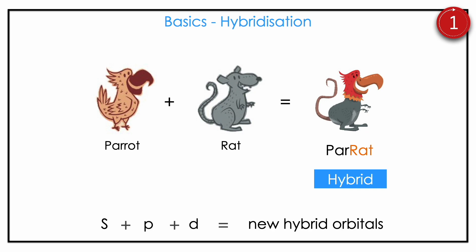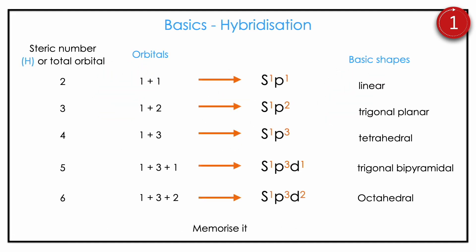Then hybridization. Think of it comically as combining a parrot and a rat — you are mixing two things to get one meaningful product. Here we are mixing the s, p, d orbitals and getting higher hybrid orbitals. You should know the steric number, which is very important: steric number 2 means sp hybridization and linear shape; 3 means sp2 and trigonal planar; 4 means sp3 and tetrahedral; 5 means sp3d and trigonal bipyramidal; 6 means sp3d2 and octahedral. You should memorize the steric number, hybridization, and shape.